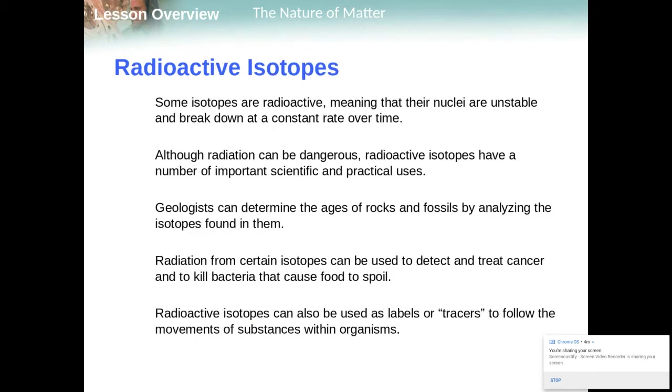Radioactive isotopes. Radioactive means that the nuclei are unstable. They break down at a constant rate over time. We can use this radioactive carbon that we see right here, carbon 14, to tell how old something is. We use this in what's called carbon dating. So the fossils that you find, if you go on an exploration and you discover a Tyrannosaurus rex bone, you can determine how old it is by carbon dating it. Radiation from certain isotopes can be used to detect and treat cancer, even kill bacteria that cause food to spoil. They can be used as labels or tracers to follow the movements of substances within organisms.